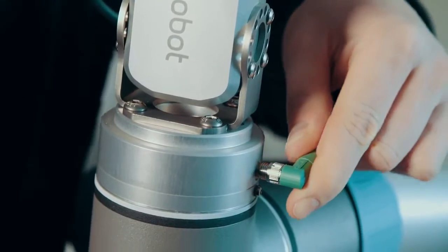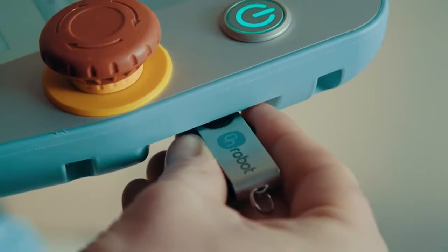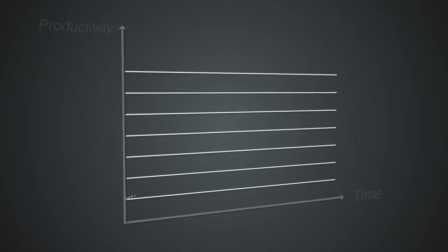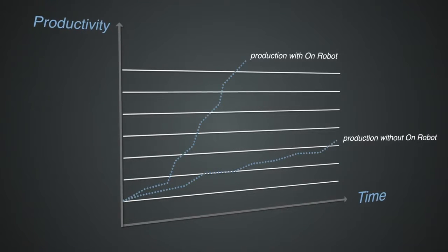The OnRobot RG2 Gripper is the only true plug-and-play gripper. But customers are not here to play, so we have designed it for you to plug and produce.